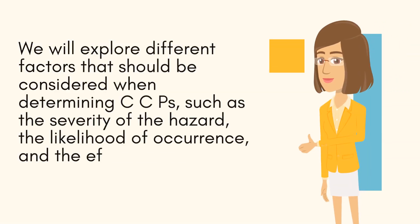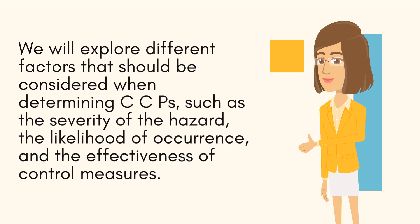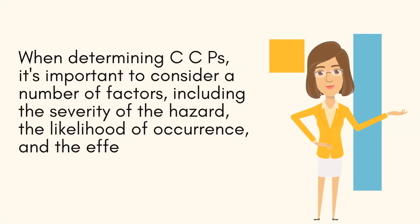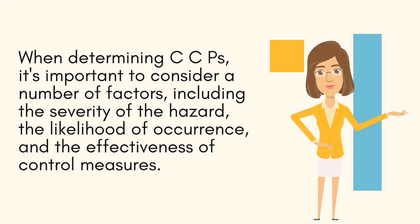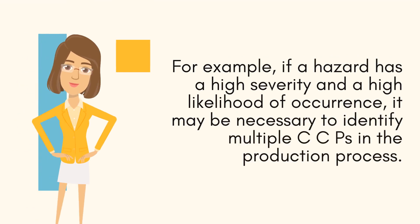We will explore different factors that should be considered when determining CCPs, such as the severity of the hazard, the likelihood of occurrence, and the effectiveness of control measures. For example, if a hazard has a high severity and a high likelihood of occurrence, it may be necessary to identify multiple CCPs in the production process.